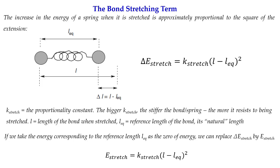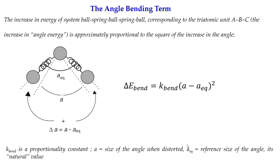Here k_stretch is the proportionality constant that defines how strong the bond is — a large value means the bond is very stiff, while a small value means it is loose and easily stretched. l_eq is the reference or equilibrium bond length. If we take the energy at the reference point as zero, we can write: E_stretch = k_stretch × (l − l_eq)².